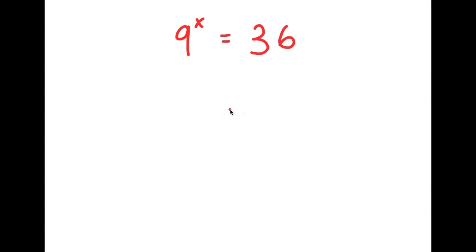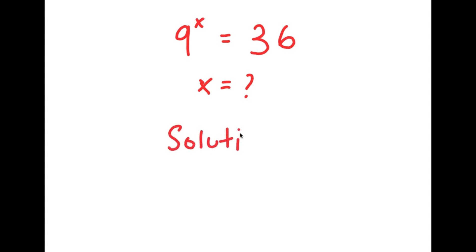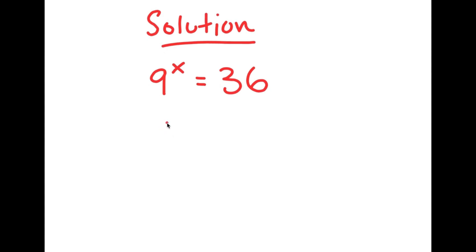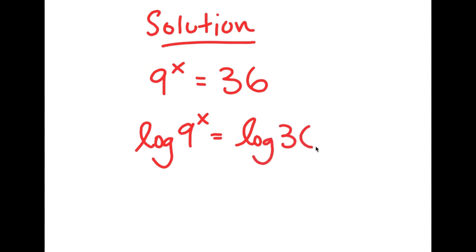In this problem, I have 9 to the power of x is equal to 36. We want to find the value of x. For my solution, I'm going to first start by rewriting my equation. So I have 9 to the power of x is equal to 36, and now I'm going to take the log on both sides. So I get log 9 to the power of x is equal to log 36.